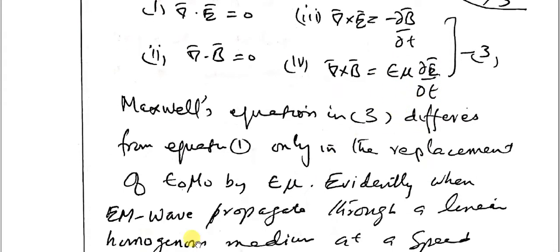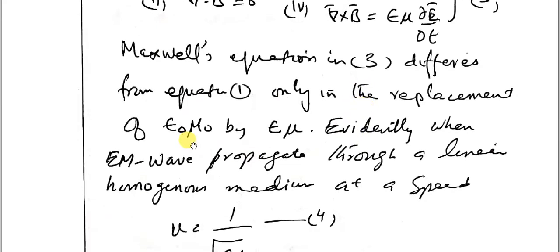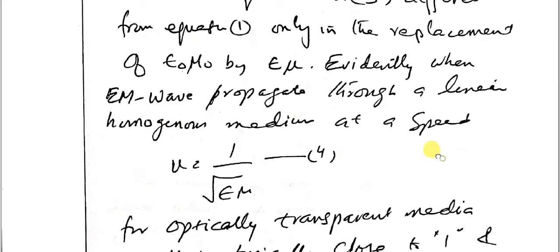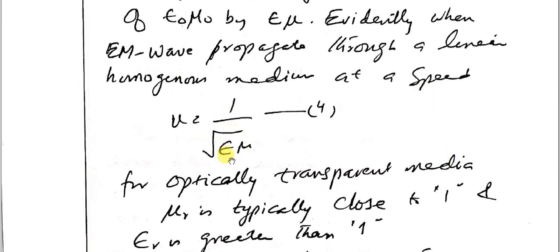This is equation number three. In equation three, differs from equation one only in the replacement of epsilon naught, mu naught by epsilon, mu. So evidently, when electromagnetic waves propagate through a linear homogeneous medium at a speed given as V equals one over square root of epsilon mu, we call this equation number four.